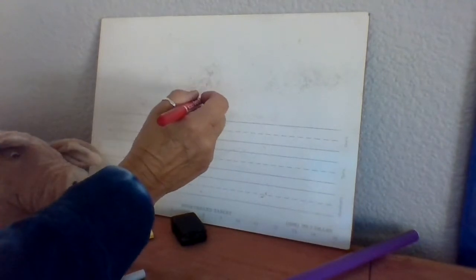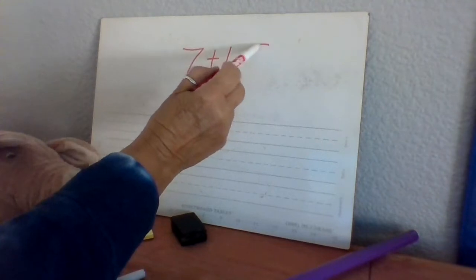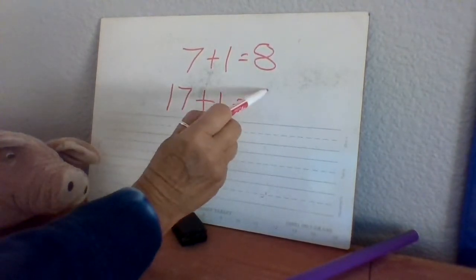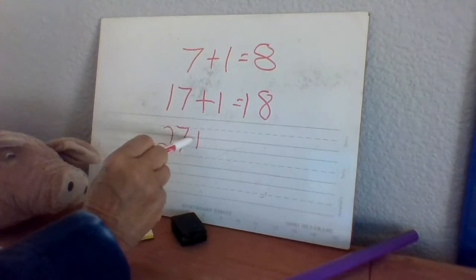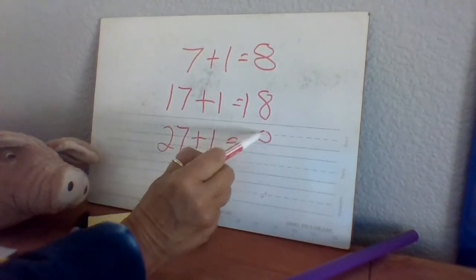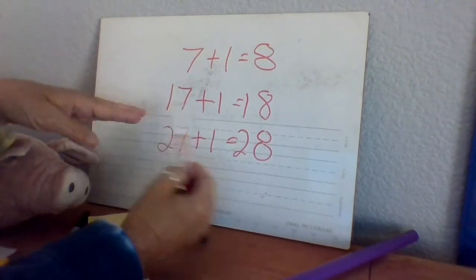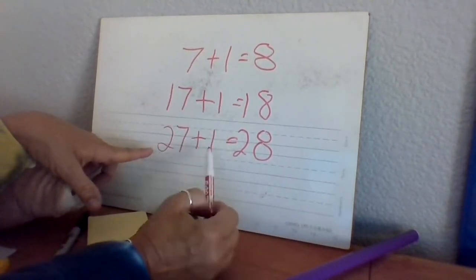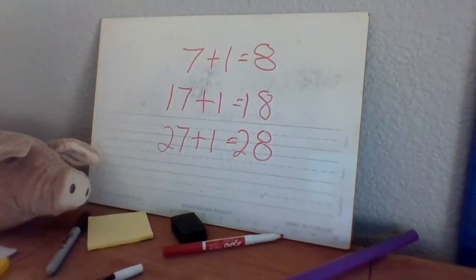If we do, what if we do 7 plus 1 equals what? 7 plus 1 is 8. So if we have 7 plus 1 is 8, and then we have 17 plus 1 is 8. We know that 7 plus 1 is 8, and we just have 1 10. If we have 27 plus 1, we know 7 plus 1 is 8, and then we just bring the two 10s over. So we're really not counting on. We're just moving it over. We're sliding it over. There's only 1 10 in the whole equation, so we're just going to bring it over here. There's only two 10s, so we're just going to slide it over. So it's really like not that much counting. It's just sliding it over.